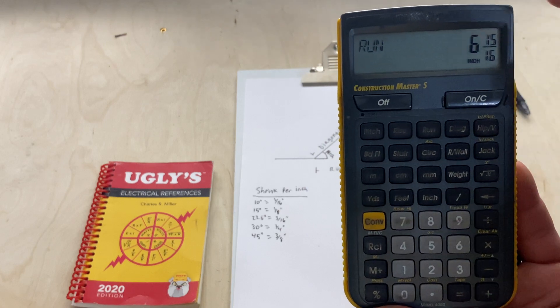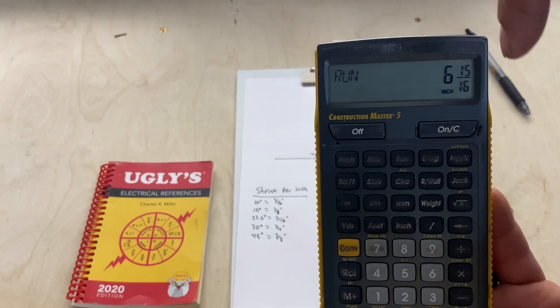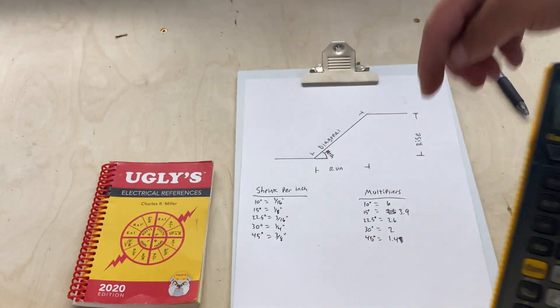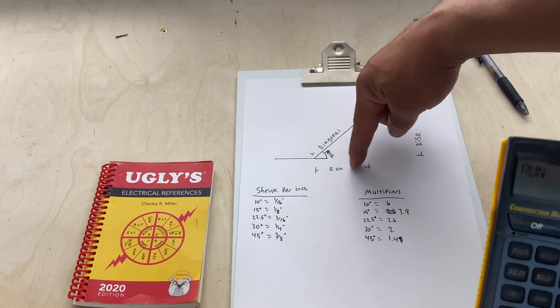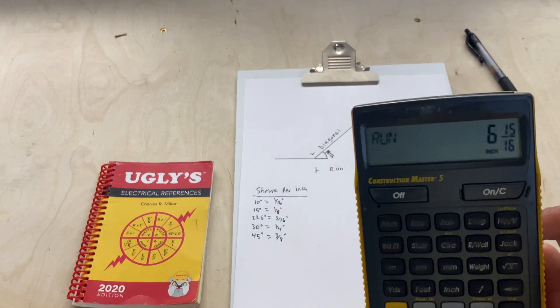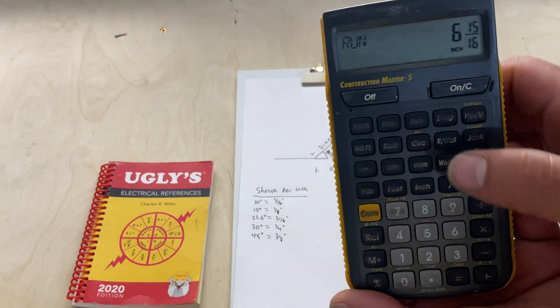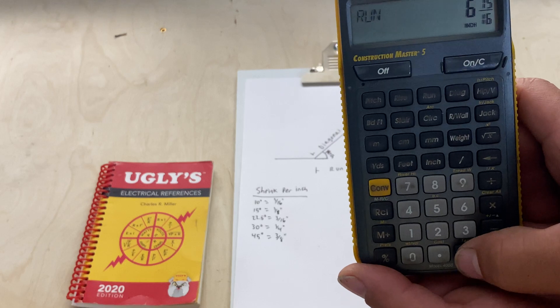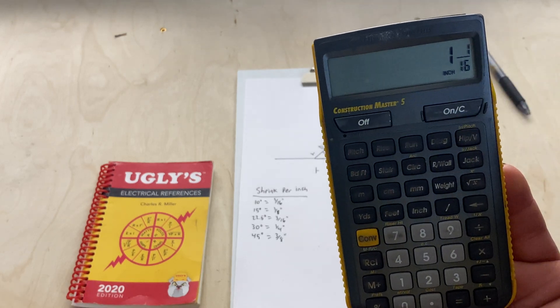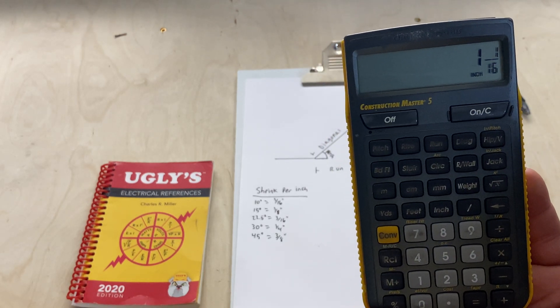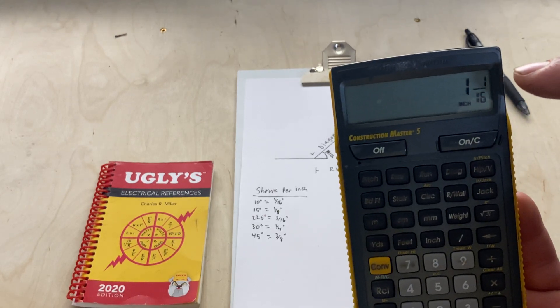If you're doing it just using the multiplier, four times two is eight. The cool thing about this is you just hit minus run. When you hit the button run, that's the measurement from this center to this center. That's six and fifteen-sixteenths.